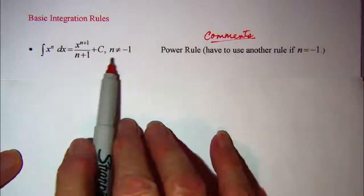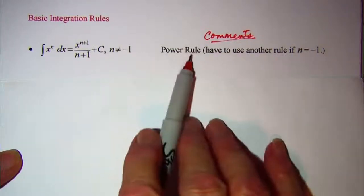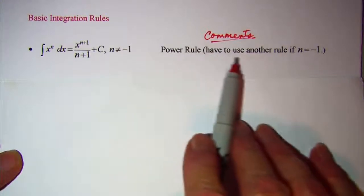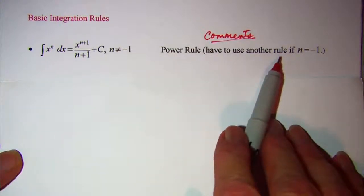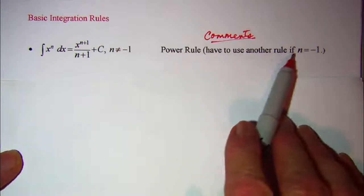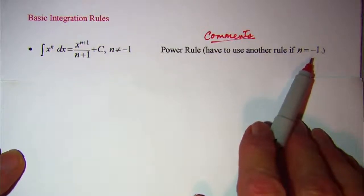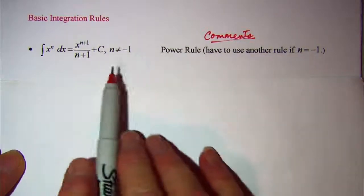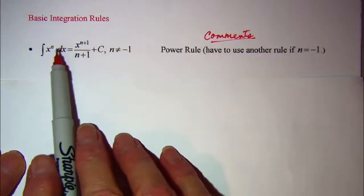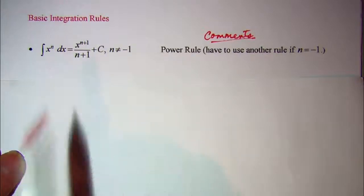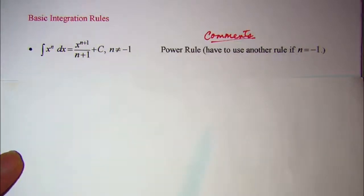This is the inverse of the power rule from differentiation, and we will have another rule to use when n is equal to negative 1. So for any exponent other than negative 1, this is the rule that we use to integrate x to a power.